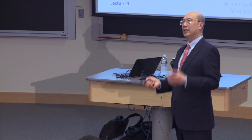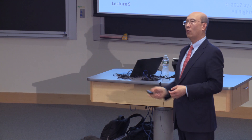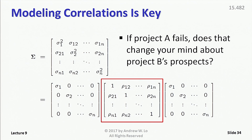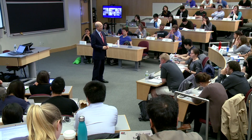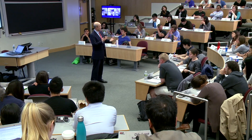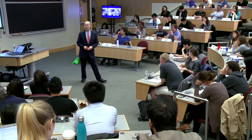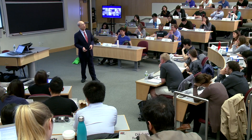The key is to model that correlation matrix. We need to know: if project A fails, does that tell you anything about the likelihood that project B will also fail? If the answer is no, it's uncorrelated. But if it does tell you something — if it makes you uncomfortable, if you lose sleep because of that — then there's some kind of correlation. That's what needs to be modeled in this business, either explicitly or implicitly.